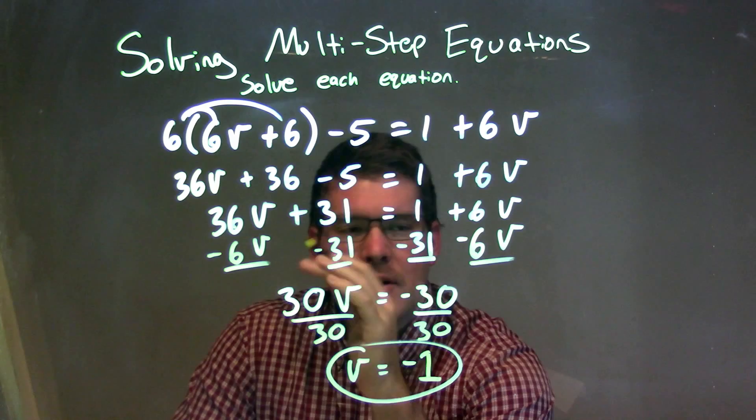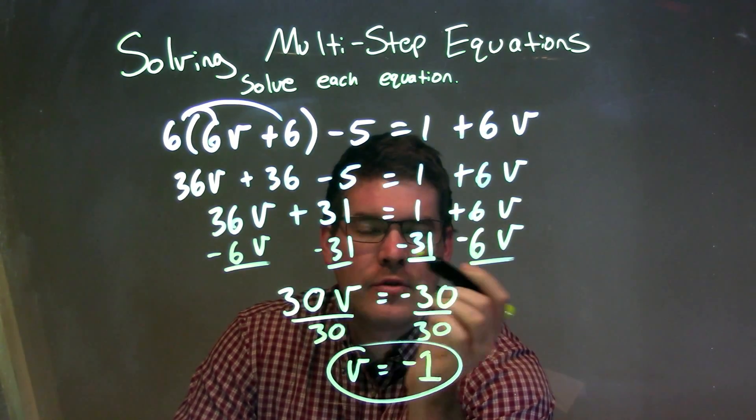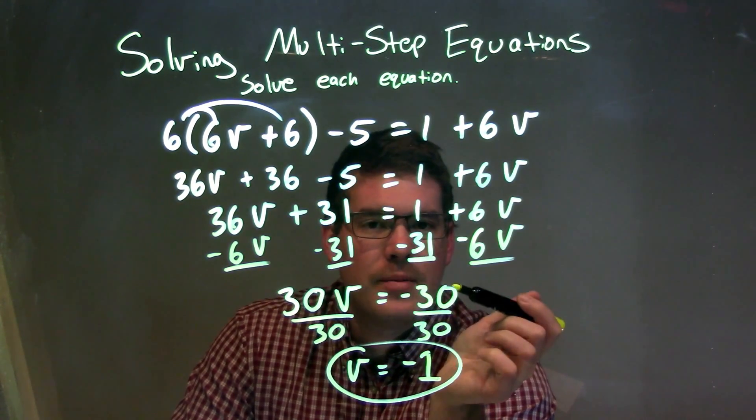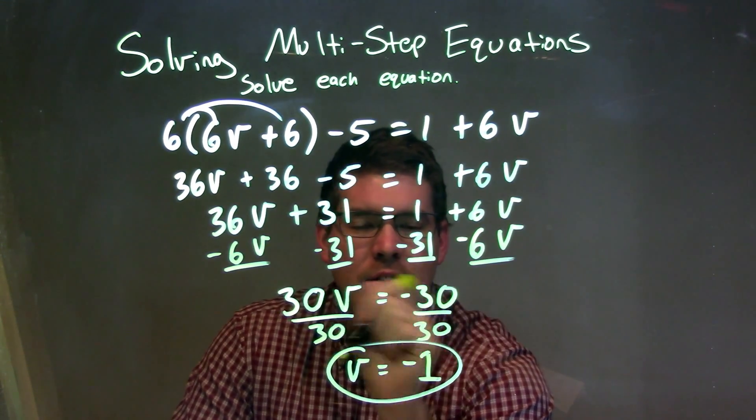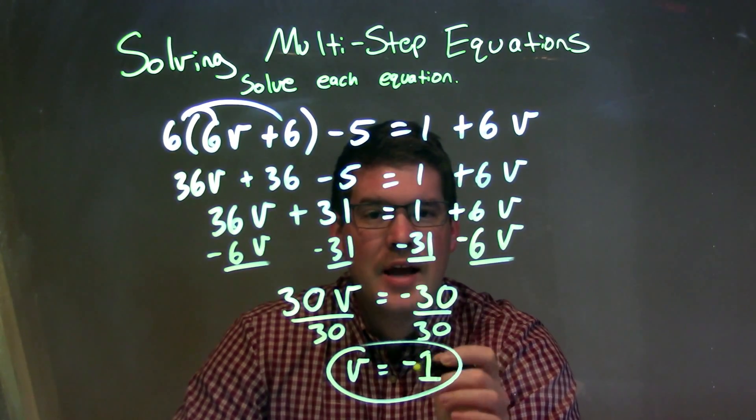So, now I had to bring everything over to one side and the other. So I brought my variables to my left and my numbers to my right. That left me with 30V equals a negative 30. And then divided by 30 to both sides, get V isolated by itself. And we got a final answer again of V equals a negative 1.